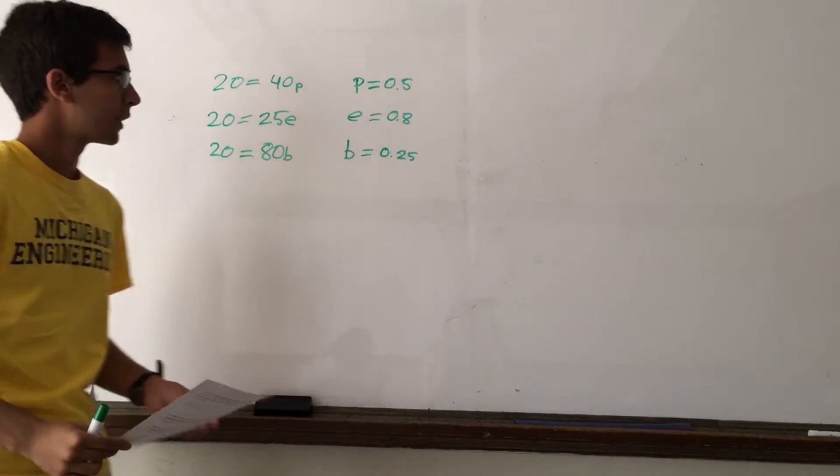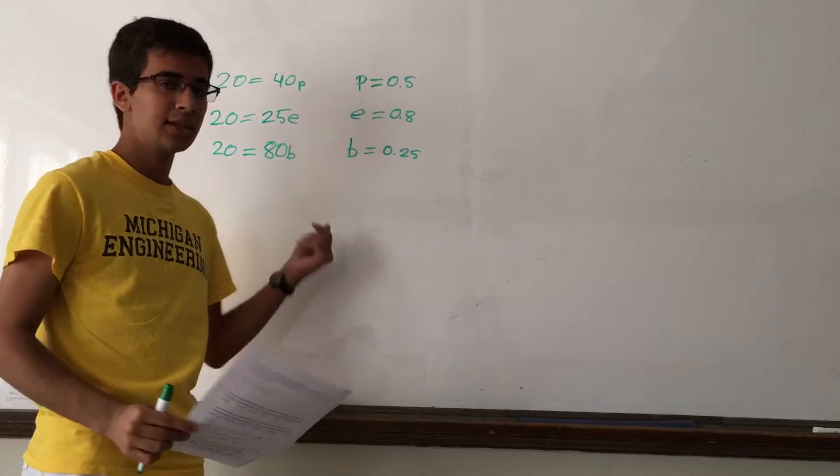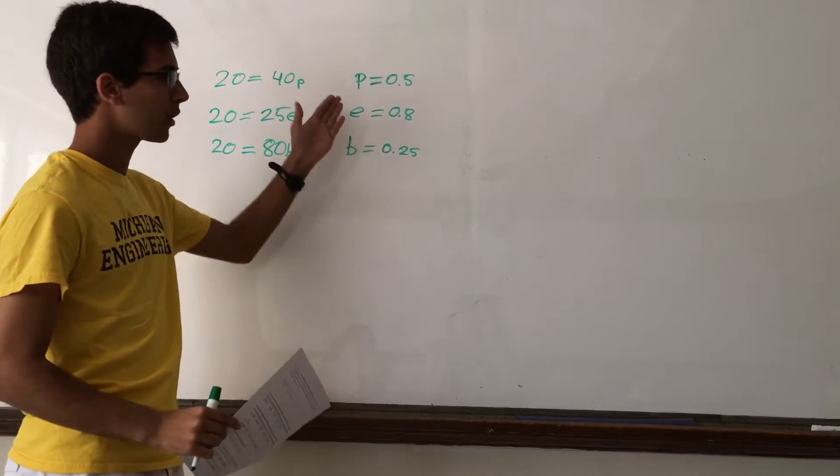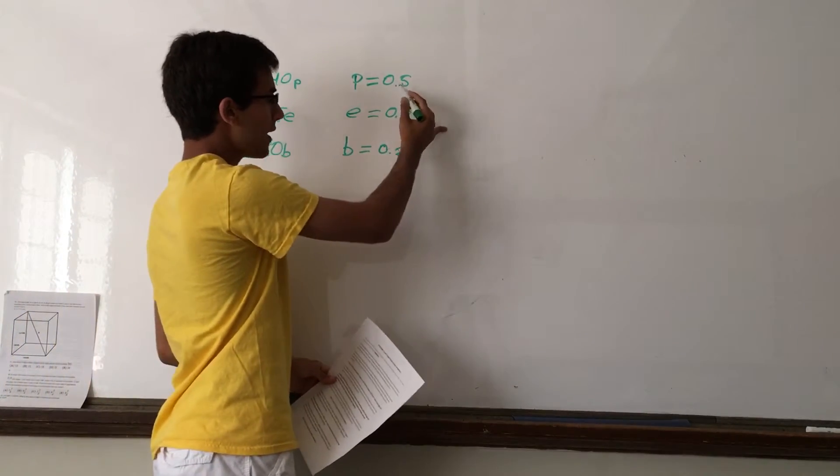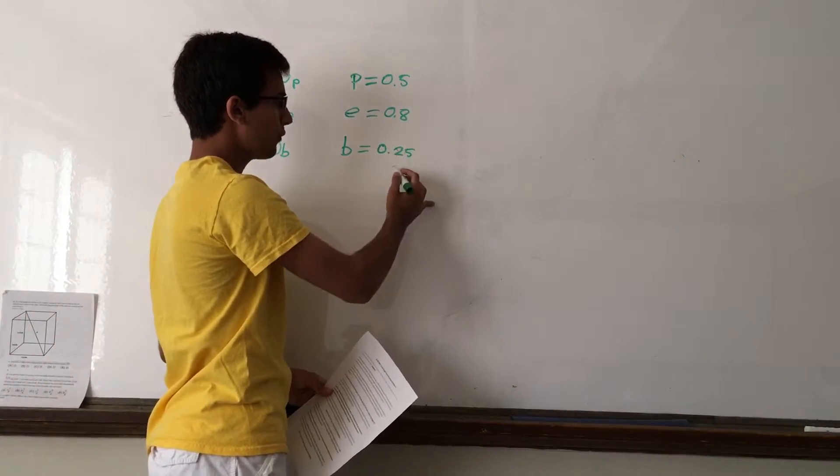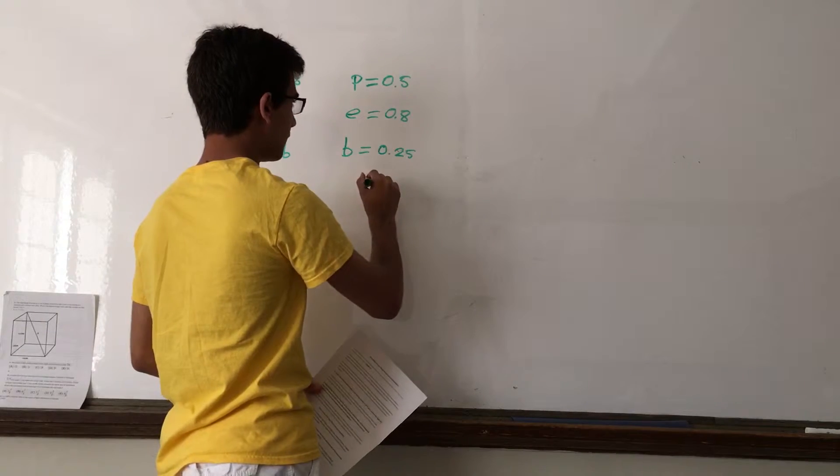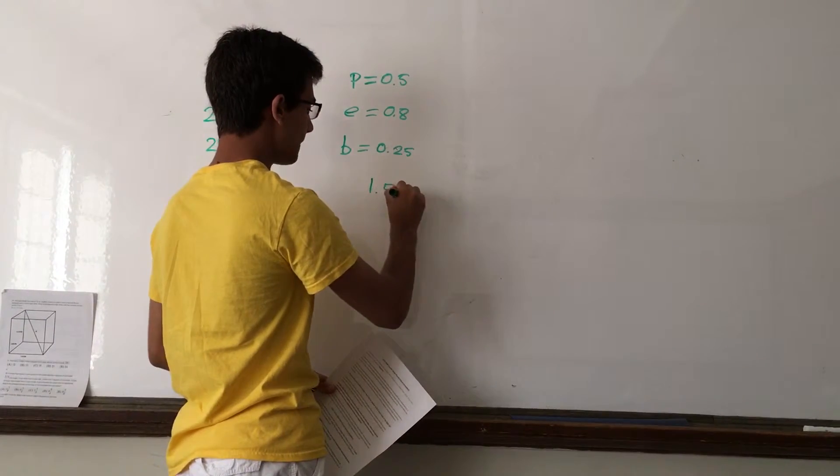Now, Britt wants to buy complete sets that include all three of these. So, we need to find the total price of getting one of each of these. 0.5 plus 0.8 plus 0.25 equals 1.55.